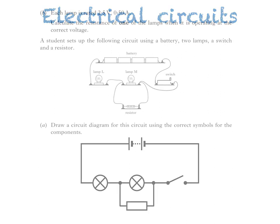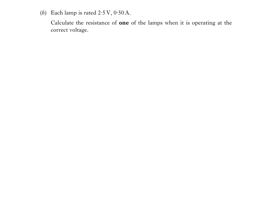Next up, it's part B. Each lamp is rated 2.5 volts 0.50 amps. Calculate the resistance of one of the lamps when it's operating at the correct voltage.